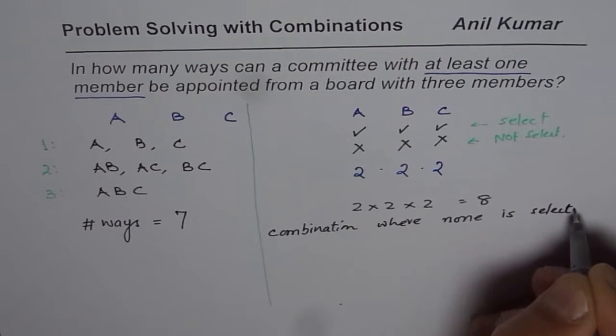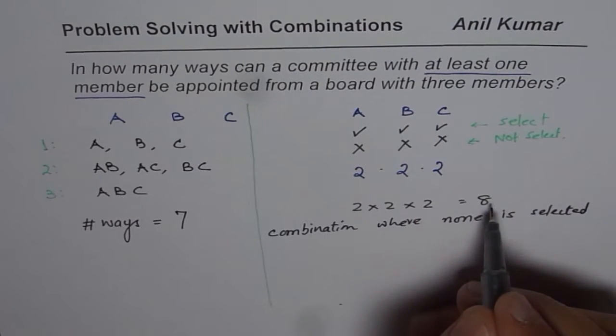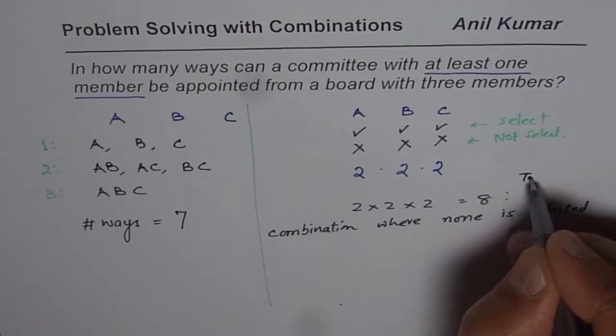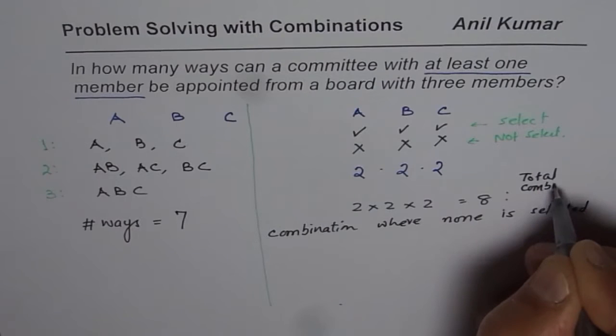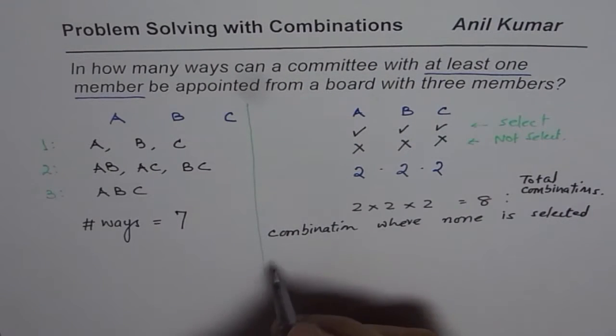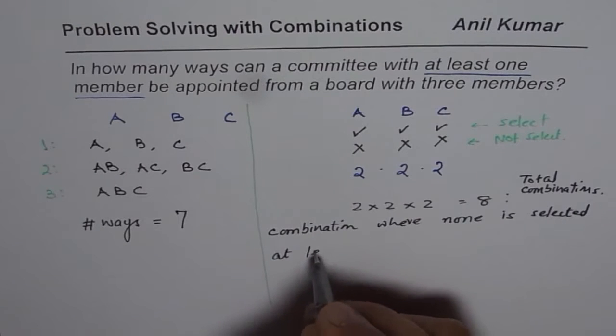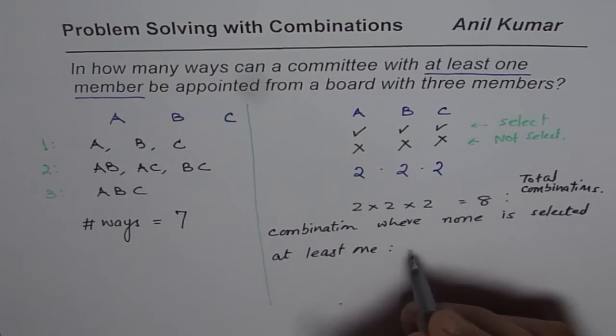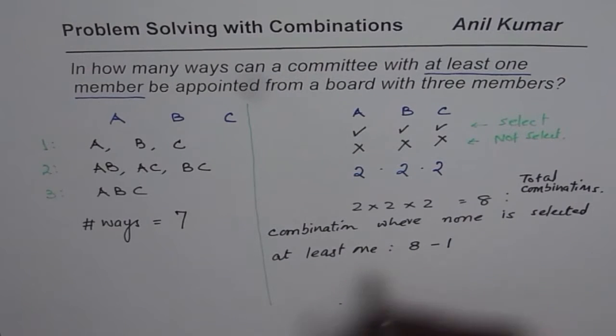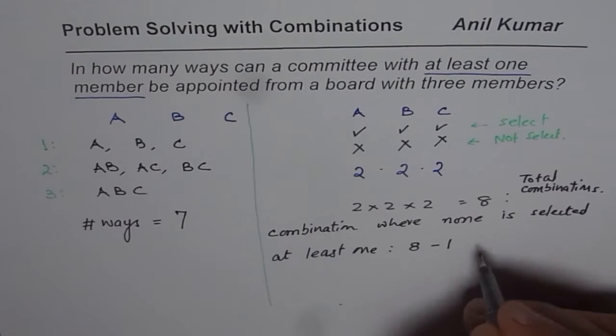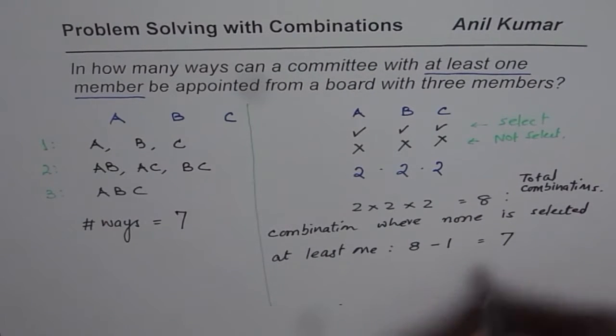So the idea is, these are total number of combinations. So these are total combinations. So in our case, at least one should be selected, then the answer should be eight minus one, since there is one combination where none is selected. And so we get our answer as seven.